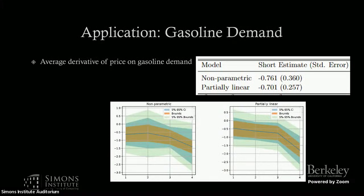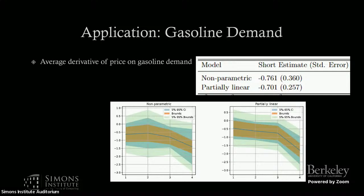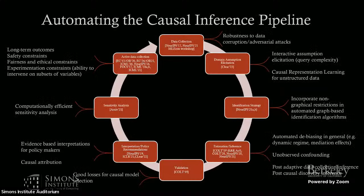We also applied it to another application where the treatment is continuous, requiring more complex covariance derivative estimation. Another open question is going beyond regression nuisance functions to general causal graphs and doing automated debiasing for general causal graphs. And with that, I'd like to conclude. Thank you very much for your attention.